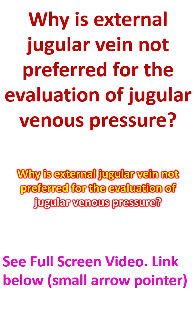The external jugular vein has a valve at the point of entry into the subclavian vein to prevent backflow of blood from the subclavian vein, which usually has a higher pressure. Moreover, the external jugular vein is not directly in line with the right atrium and superior vena cava. That is why it is taught that jugular venous pressure and pulsations should be assessed from the pulsations of the internal jugular veins.